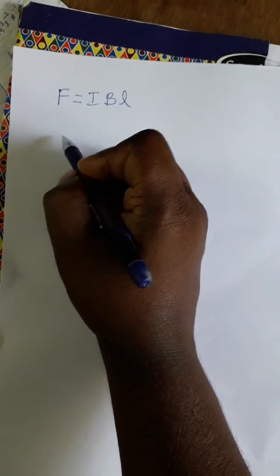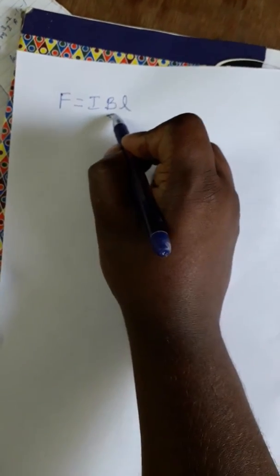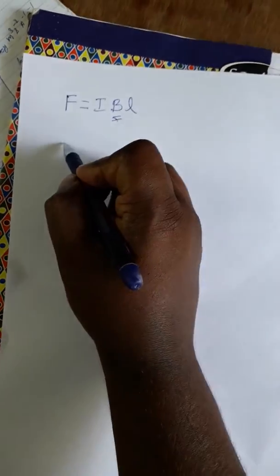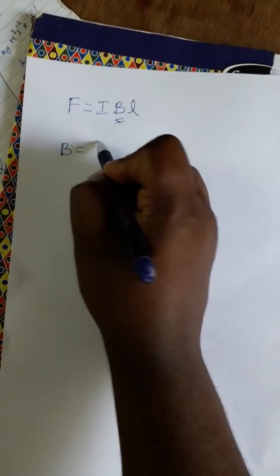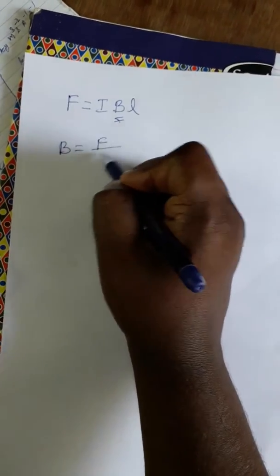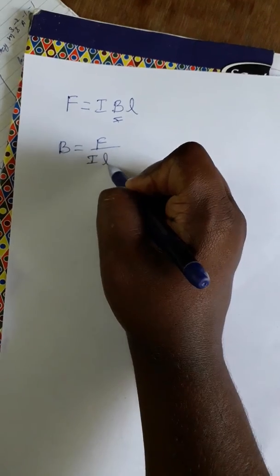So we are going to find what is Tesla. Tesla is the magnetic field unit. So B is equal to F divided by I L.